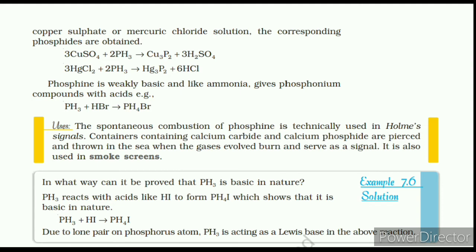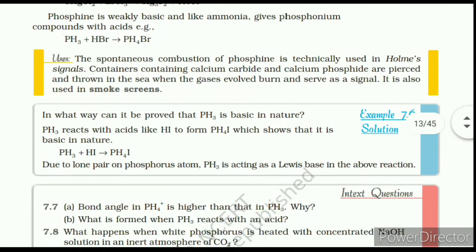Example 7.6: In what way can it be proved that PH₃ is basic in nature? PH₃ reacts with acids like HI to form PH₄I, which shows that it is basic in nature. Due to the lone pair on the phosphorus atom, PH₃ is acting as a Lewis base in the above reaction. I'm skipping the in-text question for you to solve later, or you can pause the video and solve it right now.